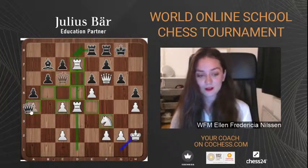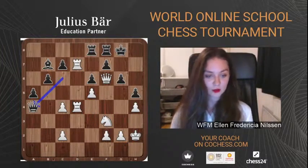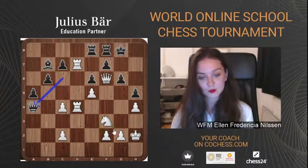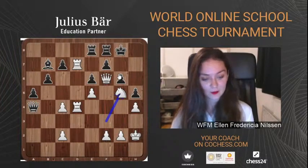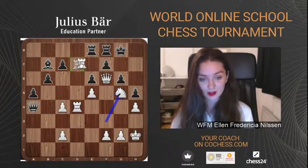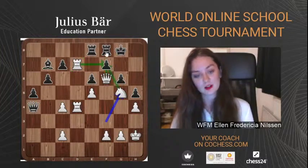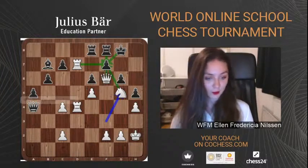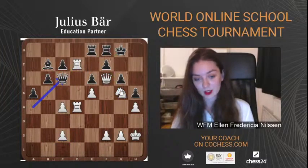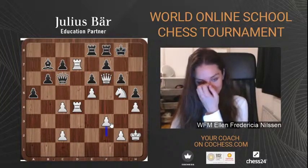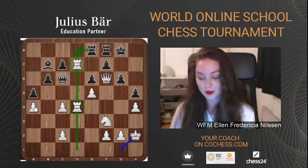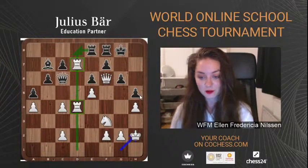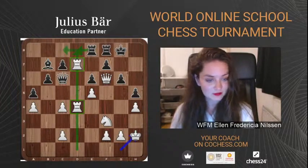Another idea Black could have had was taking the pawn on a4, but then Black is no longer threatening mate on g2, which means White can bring the last piece into the attack with knight g5. In this position it will be very close to mate — White has three attackers on the f7 pawn and Black only has two defenders. If Black tries to go back to threaten the mate again, the knight on g5 won't retreat; White will play f3, covering the mate. Nigel Short decided not to take the pawn on a4, as he could see it would lead to immediate destruction of his position.